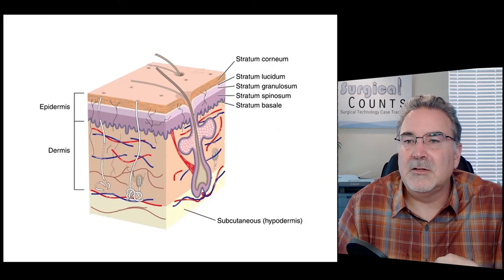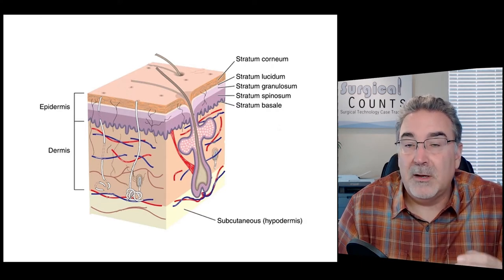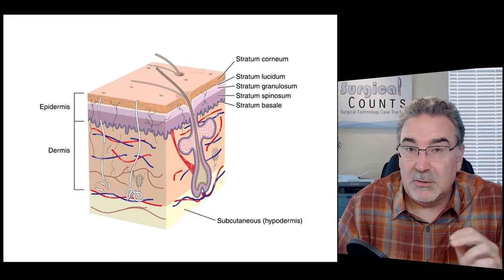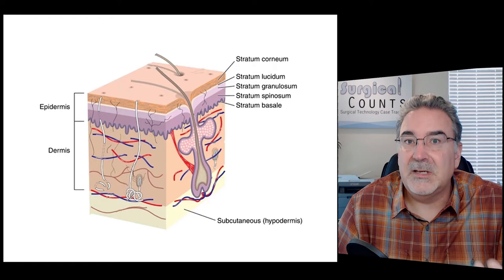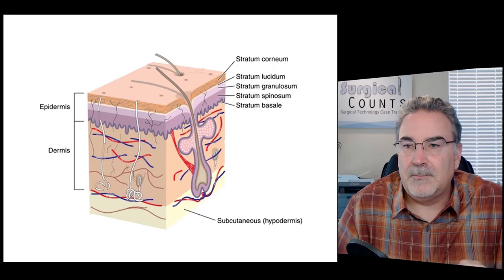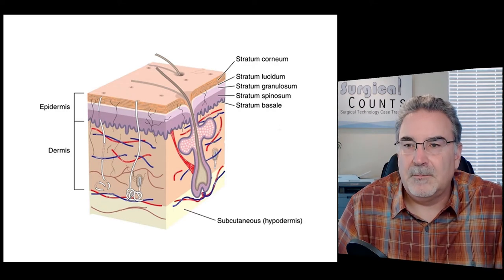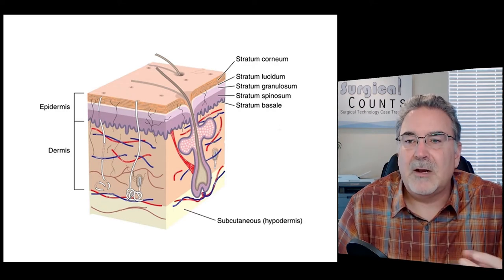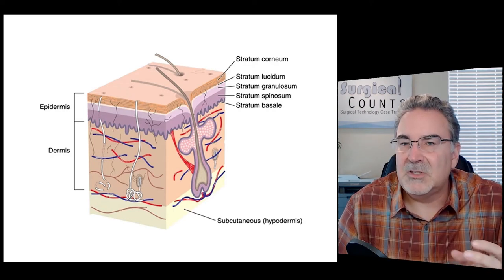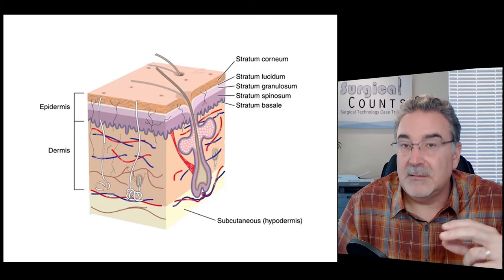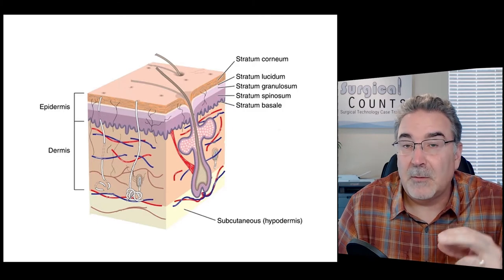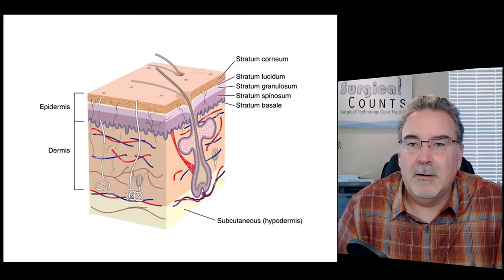These layers are known as the stratum corneum, the outermost layer of mostly dead skin cells; the stratum lucidum; the stratum granulosum; the stratum spinosum; and the stratum basale. Basale looks like 'base,' and that's where it comes from — the base or bottom layer of the epidermis.